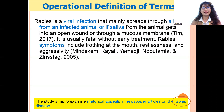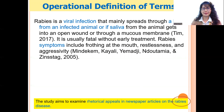Rabies is a viral infection that mainly spreads through the bite from an infected animal, or if the saliva of the animal gets into an open wound. It may affect cats and dogs and could spread to human beings.